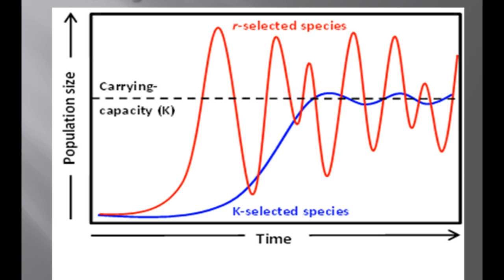Life history traits favored by natural selection may vary with population density and environmental conditions. Ecologists break organisms into two categories. K-selection, or density-dependent selection, selects for life history traits that are sensitive to population density. In density-dependent populations, birth rates fall and death rates rise with population density. Get that in your notes.